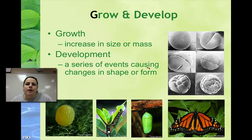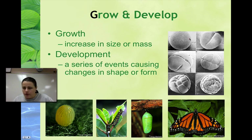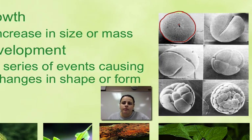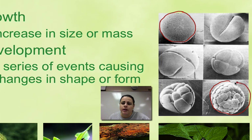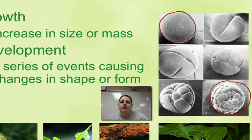All living things have to grow and develop. Growth means getting bigger, and development means changing shape or form. This is a zygote — that's when an egg and a sperm first unite, and that's what you looked like. Growth happens as it splits into two, then four cells, then a big clump of cells. Over time, there's a lot of development — changes in shape and form.